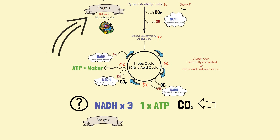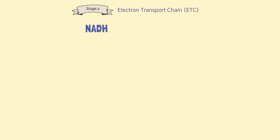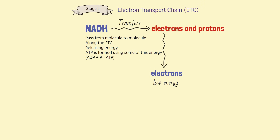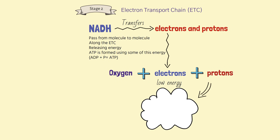All of stage two is in the mitochondria. The last part deals with the electron transport chain. NADH transfers electrons and protons, passing the electrons to the electron transport chain — a series of molecules where electrons pass from molecule to molecule, releasing energy. Some of this energy is used to make ATP; some is lost as heat. At the end, the now low-energy electrons combine with protons and oxygen to form water. Once NADH transfers the electrons and protons, it reverts to NAD+.